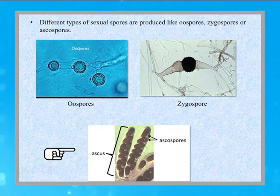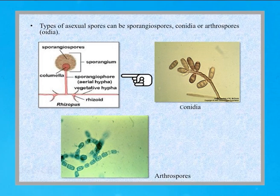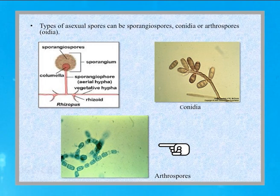Asexual spores are not formed due to fusion of male and female, and can be of different types. The first is sporangiospores, formed inside the sporangia — an asexual spore where the nuclei are haploid. Another type is conidia. The third type is arthrospores, where the mycelium undergoes fragmentation to give rise to different spores. All these are asexual spores giving characteristic properties to different genera of molds.